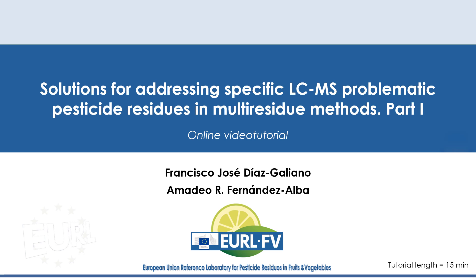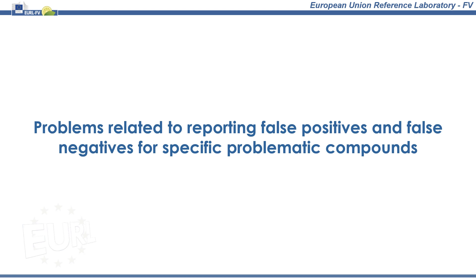Sometimes there is not a readily available, easy and inexpensive solution, but nevertheless being aware of the situation might provide laboratories with an advantage. A very common situation for a laboratory is facing a sample for which the presence or absence of a compound is not crystal clear. In these cases, there is a risk of reporting false positives or false negatives. In the following slides, we will present some false positives and false negatives we have recently encountered during the evaluation of the results of proficiency testing.